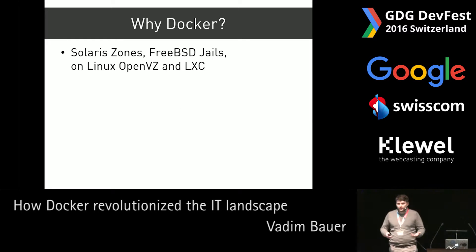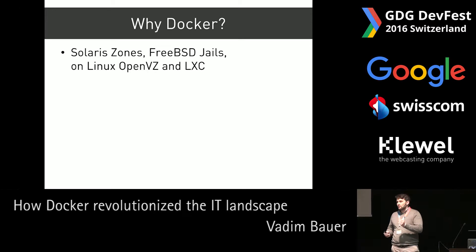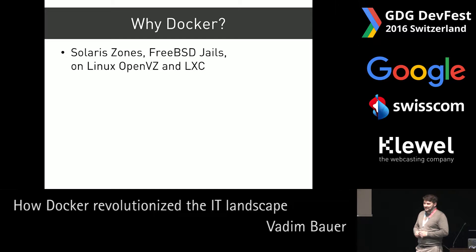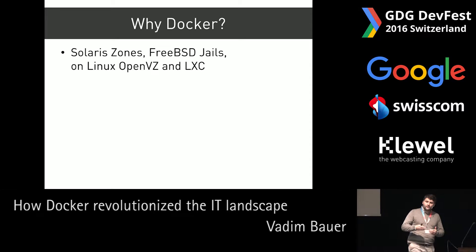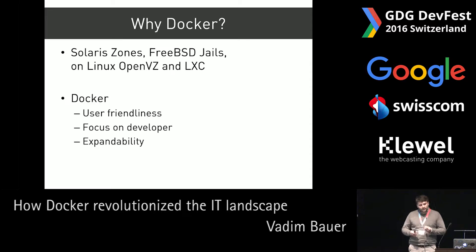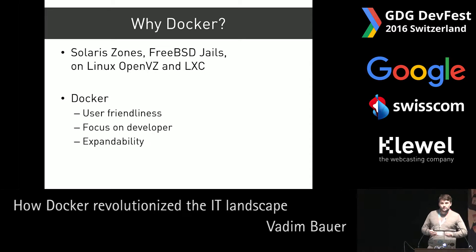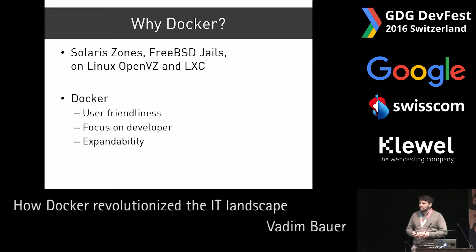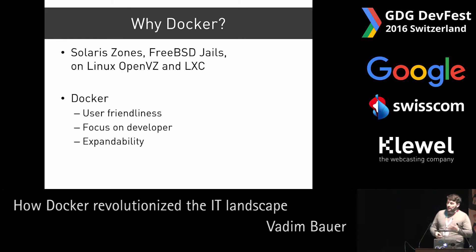But why is Docker so popular? Docker is only about two years old. We had Solaris zones, also called Solaris containers, that exist since 2005, and FreeBSD jails that exist since the year 2000. We have these container concepts in Unix history all the time. So why is Docker so successful in recent years? It's actually the focus of Docker specifically to be user-friendly, to be easy to use for developers, and also with its functionality to be very easily extendable — much easier than the other solutions.